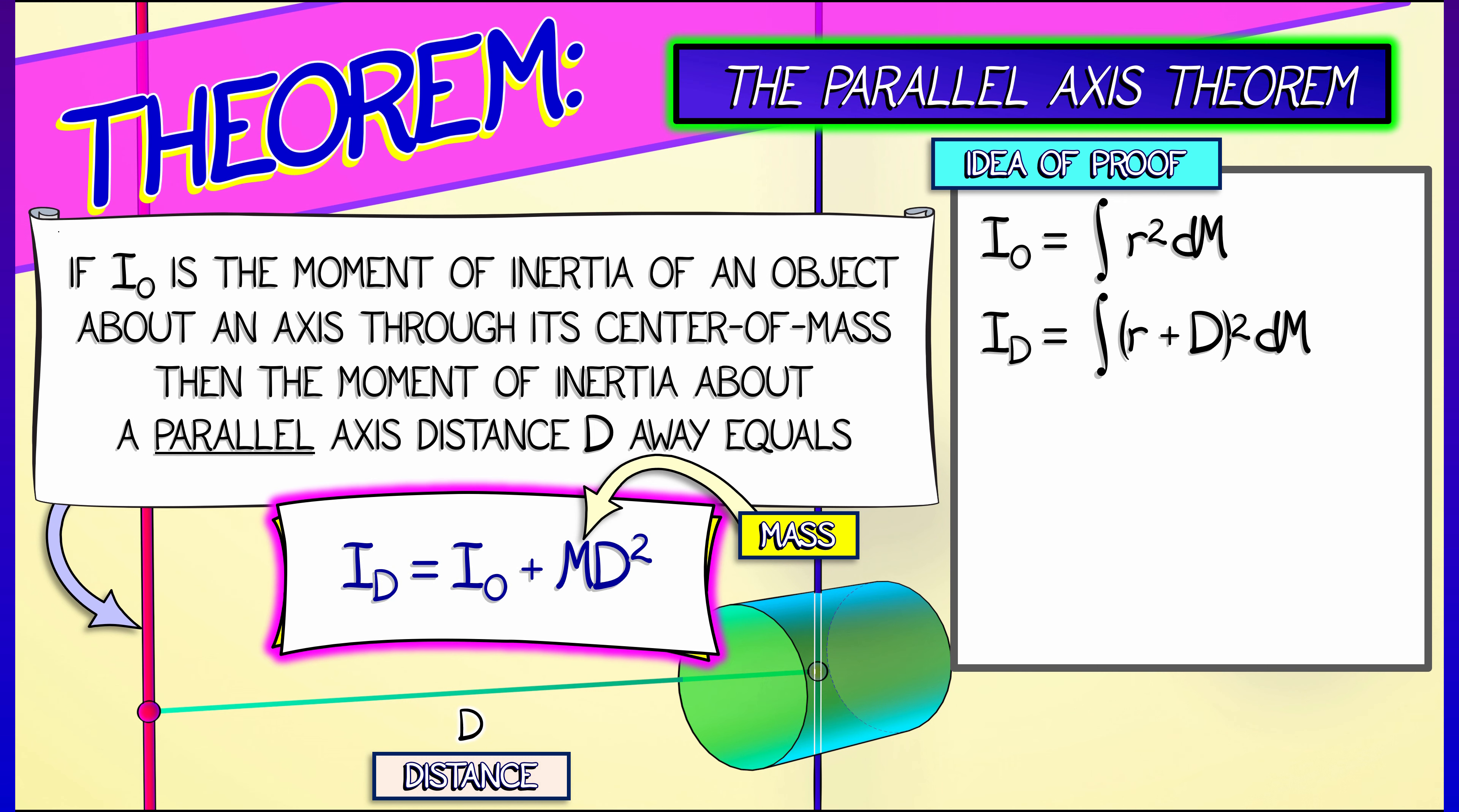Okay, so now all we have to do is expand out that integrand and use the additivity of integrals to break this up into three pieces. The integral of r squared, the integral of 2dr, and then the integral of d squared, all with respect to mass. Now, that first term, the integral of r squared dm, hey, that's I0. That's by definition.